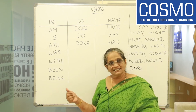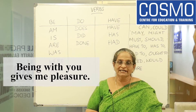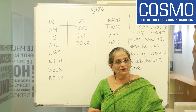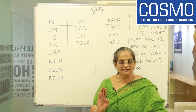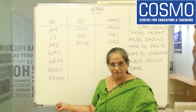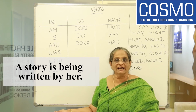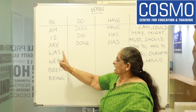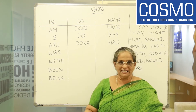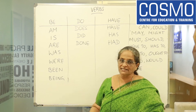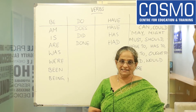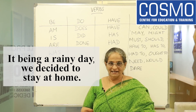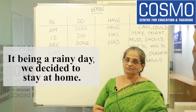BEING is used to start a sentence when the subject of both clauses is the same. 'Being with you gives me pleasure.' BEING is also used in passive voice continuous tense. For example: 'She is writing a story' becomes 'A story is being written by her' — B-E-I-N-G. Another example: 'It being a rainy day, we decided to stay at home.'